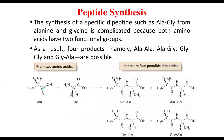Peptide synthesis is complicated. Synthesizing a specific dipeptide such as alanine-glycine from individual alanine and glycine is difficult because both amino acids have two functional groups. As a result, four products are possible: alanine-alanine, alanine-glycine, glycine-glycine, and glycine-alanine. There is a likelihood that any of these four combinations may actually be formed, so peptide synthesis is very challenging.